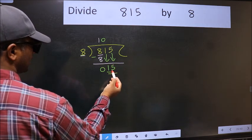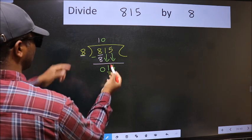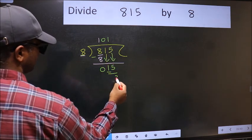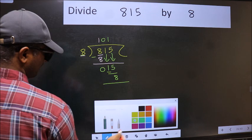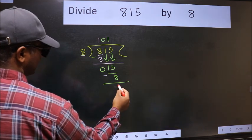Now 15. A number close to 15 in 8 table is 8 once 8. Now we should subtract. We get 7.